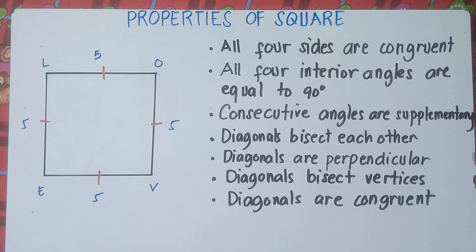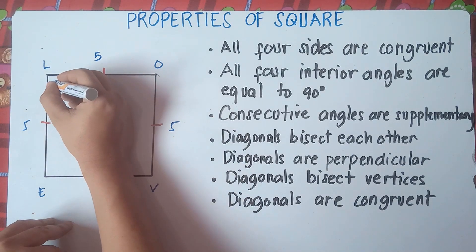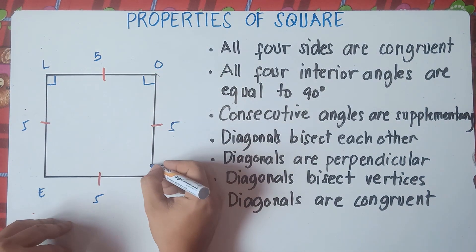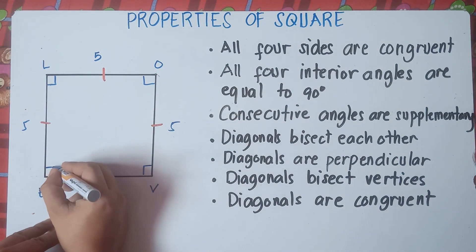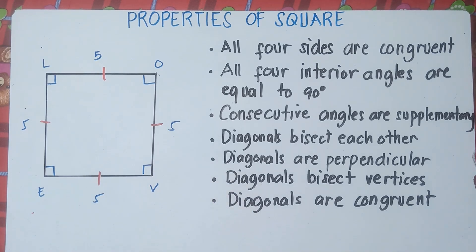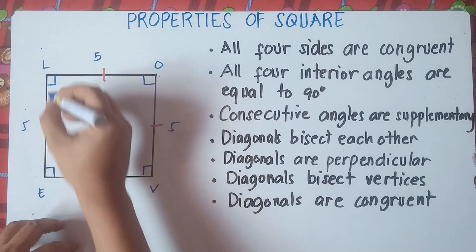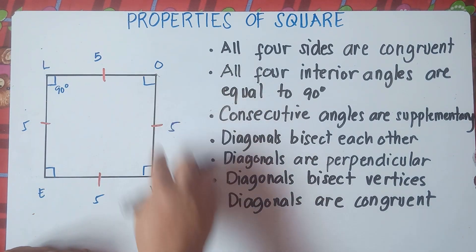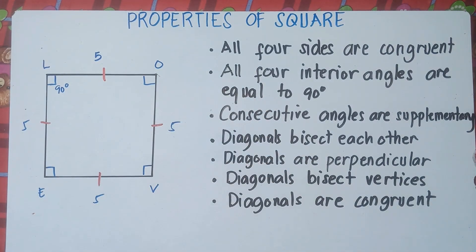Let's go to the second property: all four interior angles are equal to 90 degrees. The interior angles are angle L, angle O, angle V, and angle E. So angle L is 90 degrees, angle O is 90, angle V is 90, and angle E is 90. That's according to the properties of a square.